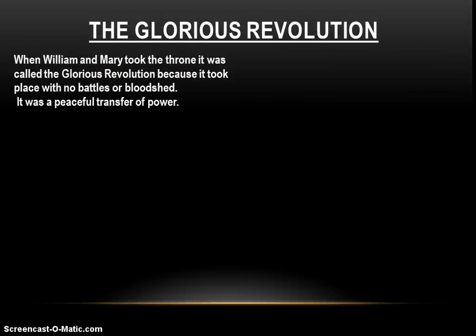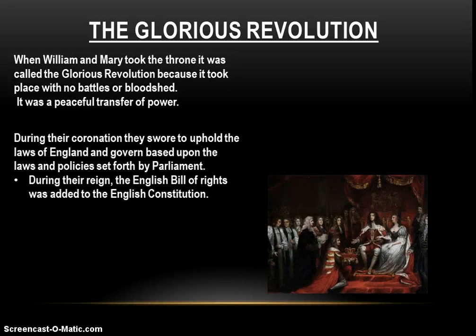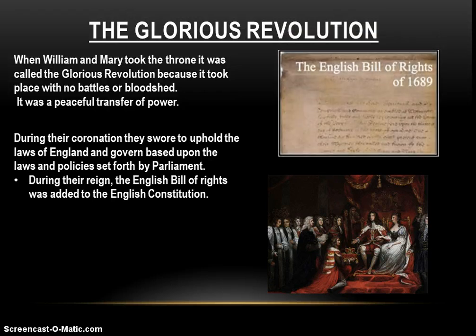When William and Mary take the throne, this is what they called the Glorious Revolution. They called it the Glorious Revolution because it took place with no battles and no bloodshed — it was a peaceful transfer of power, and that's what made this revolution glorious. During their coronation ceremony, they do something English monarchs hadn't done before: they swear an oath to uphold the laws of England and govern based upon the laws and policies set forth by Parliament. They don't swear to rule under God as they see fit; they swear to uphold the laws that already exist and to act within those laws. This signals a huge shift in who's really in power in England.